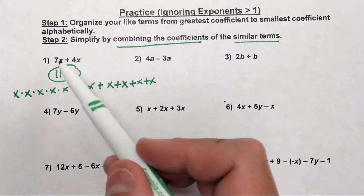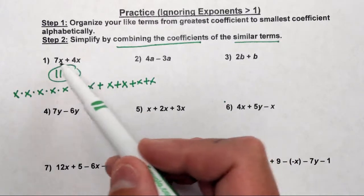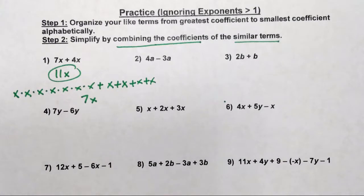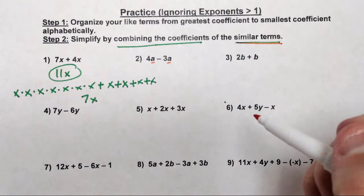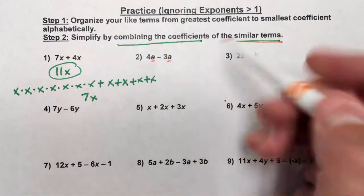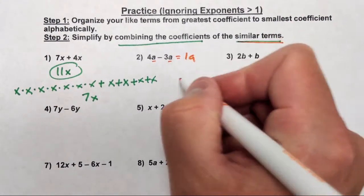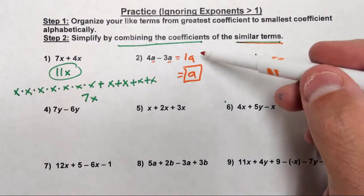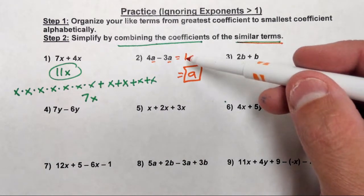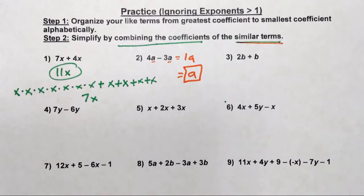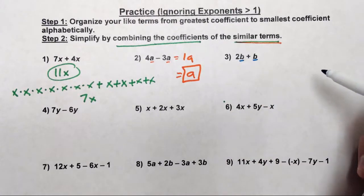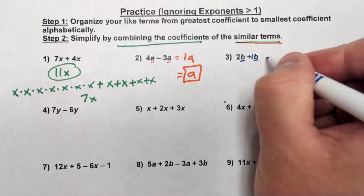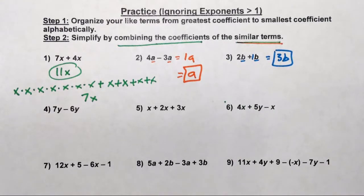Adding the coefficients is a lot faster than counting up individual x's. For problem 2, I have 4a minus 3a. These are similar terms because they both have just the variable a. 4 minus 3 is 1a, and we don't really need the 1 in front, so a is the best answer. For problem 3, we have 2b plus b, which is 2b plus 1b. That gets me 3b.